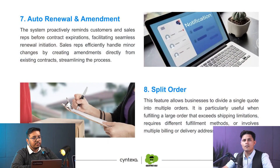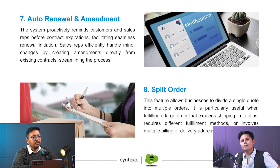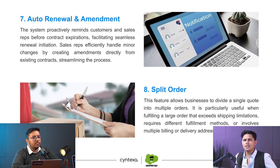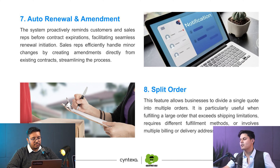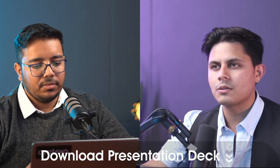Let's go to auto renewal and amendment. A lot of the time in B2B sales, there are renewals and within those renewals there are amendments as well. All of that process can be taken care of very easily with Salesforce CPQ. Then comes split order — whenever you place a particular order, the order can be split into different fulfillments. If you want some items from the order to be shipped to one location and some to be shipped to another location, you can easily do that with Salesforce CPQ.